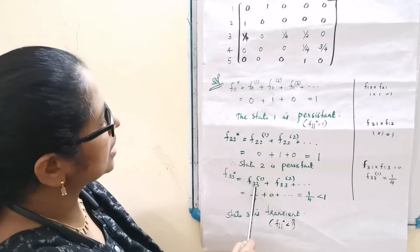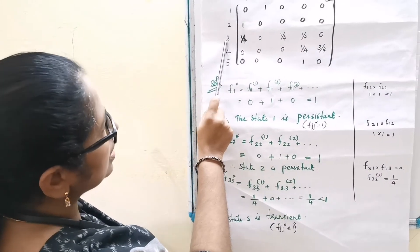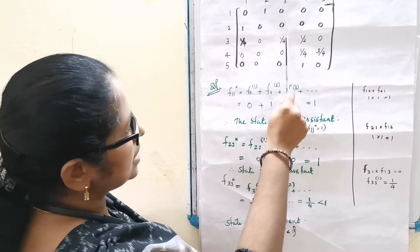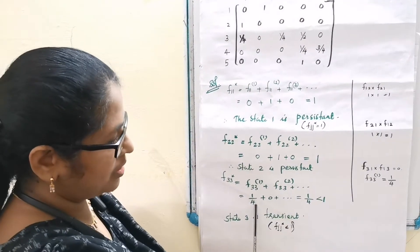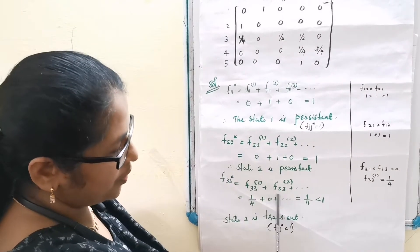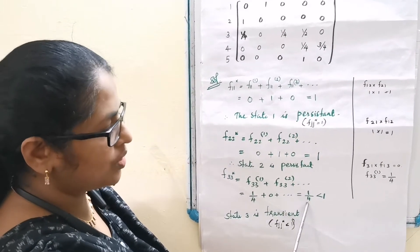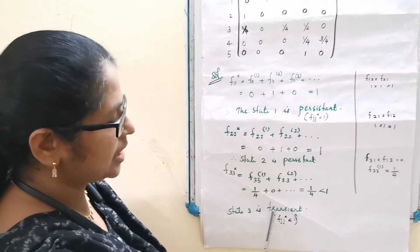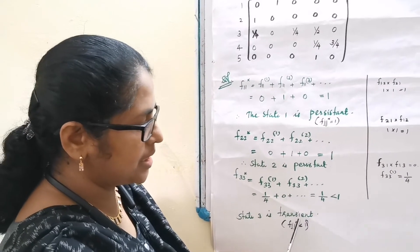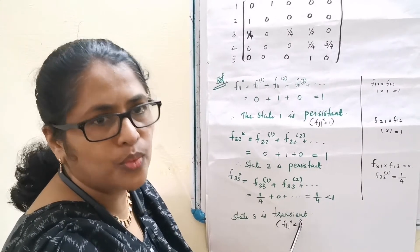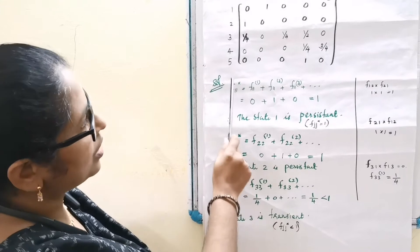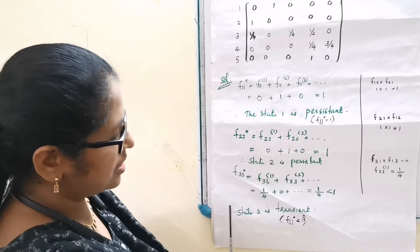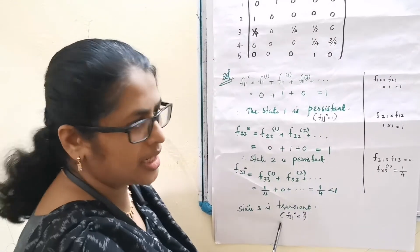In state 3, starting from 3, reaches 3 for the first time in 1 step — that is 1/4. Other possibilities are 0. So F33* equals 1/4, which is less than 1. Therefore state 3 is transient, meaning Fjj* less than 1. So state 1 is persistent, state 2 is persistent, and state 3 is transient.